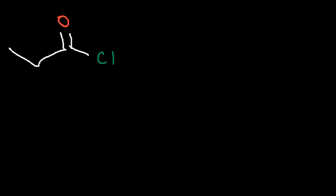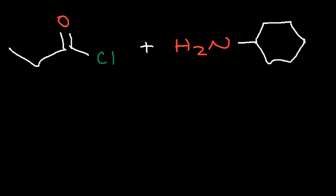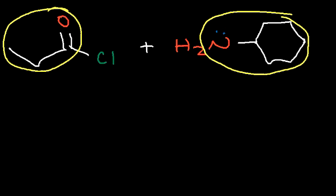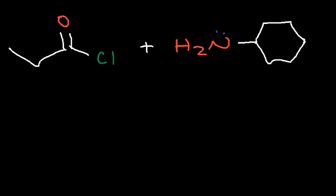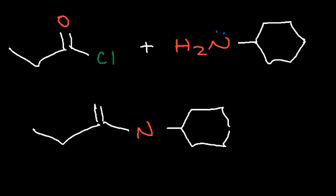Now that you understand the mechanism, go ahead and predict the major product between this 3-carbon acid chloride and this amine. This is a primary amine. The side product is going to be HCl, so we're going to combine this portion of the molecule with this portion, losing one hydrogen on the nitrogen. Keep in mind, nitrogen likes to form three bonds. The nitrogen is going to be attached to the 6-carbon ring, and since it started with two hydrogen atoms, it's going to keep one of them. The side product is HCl, which is usually the case when you start with an acid chloride.